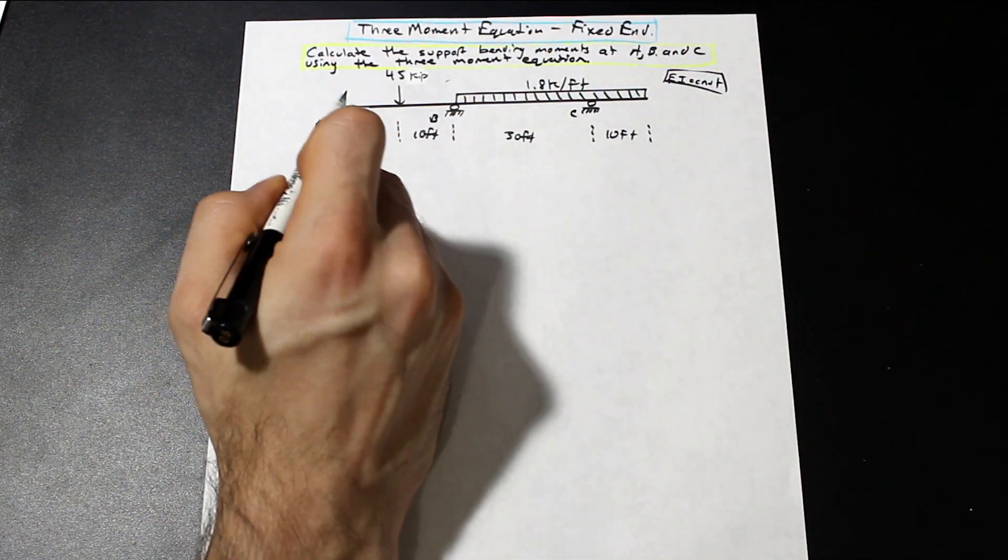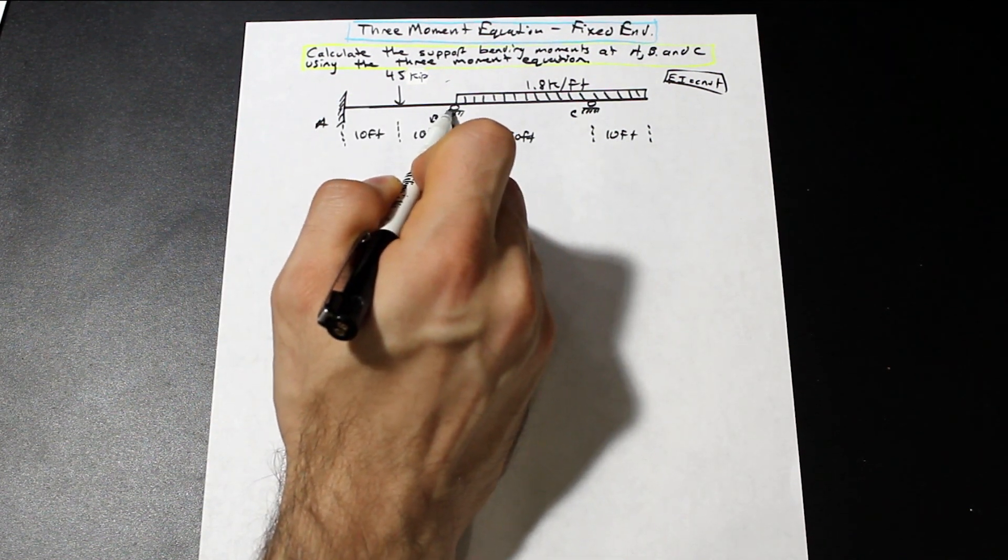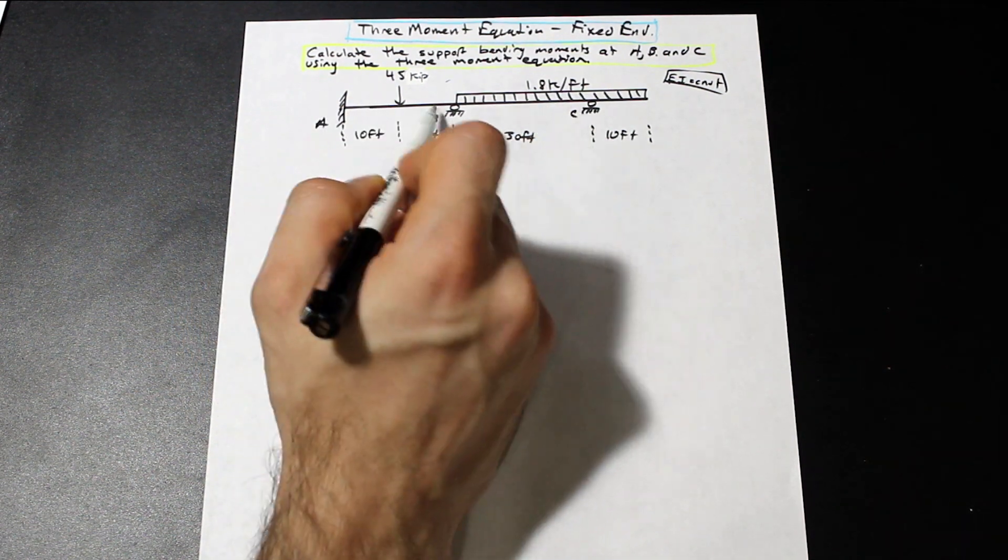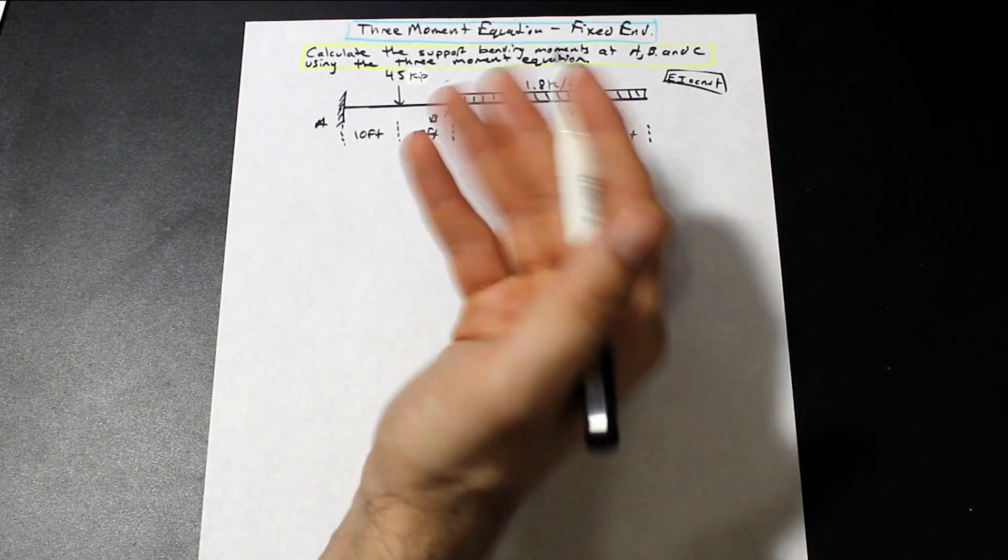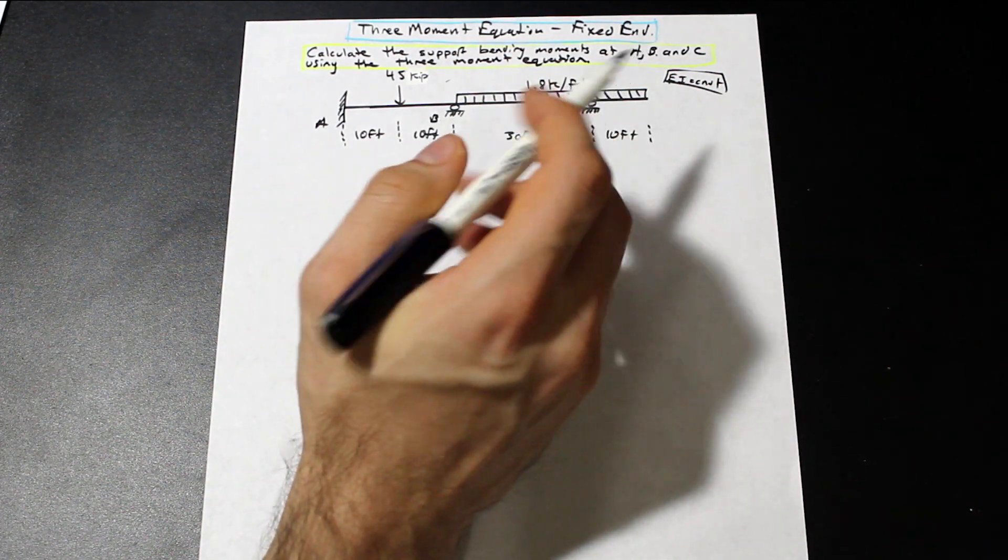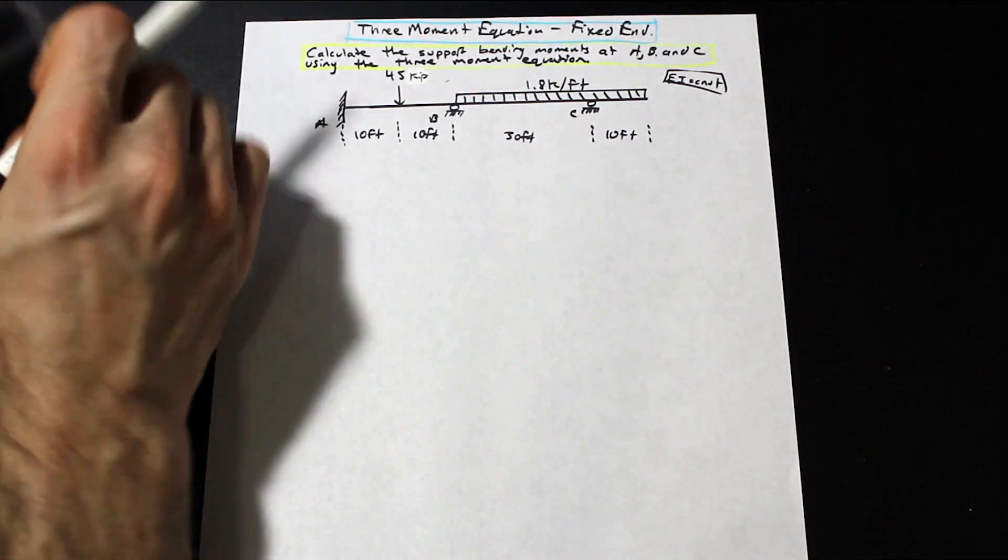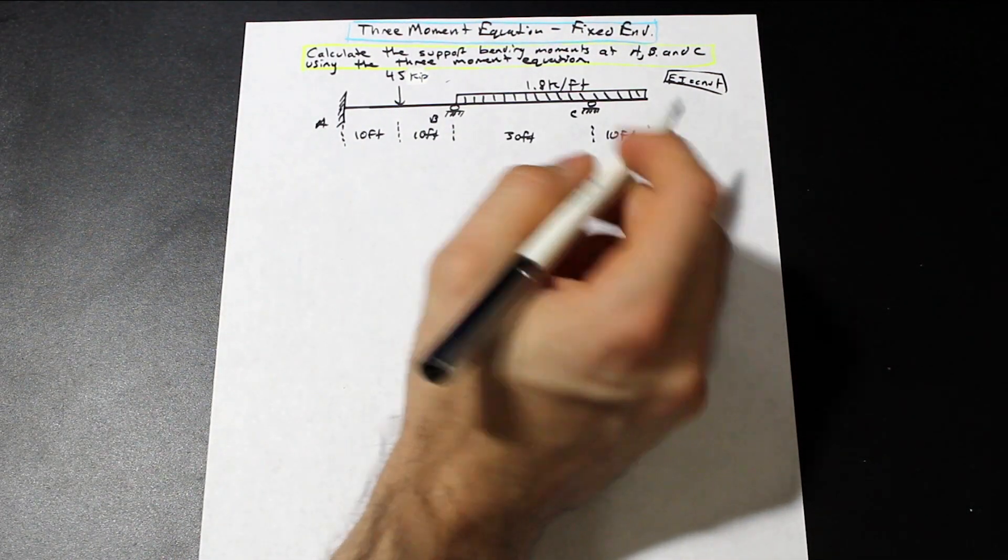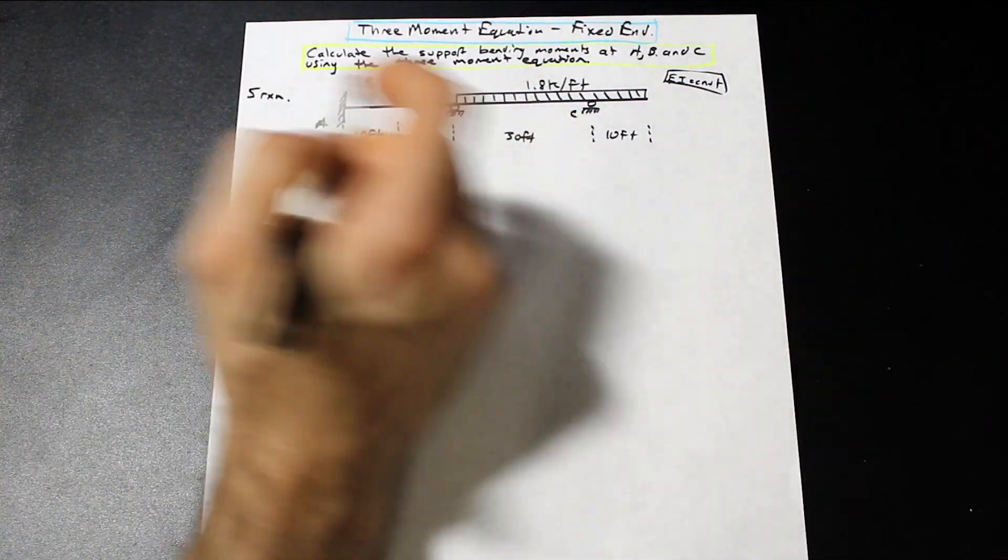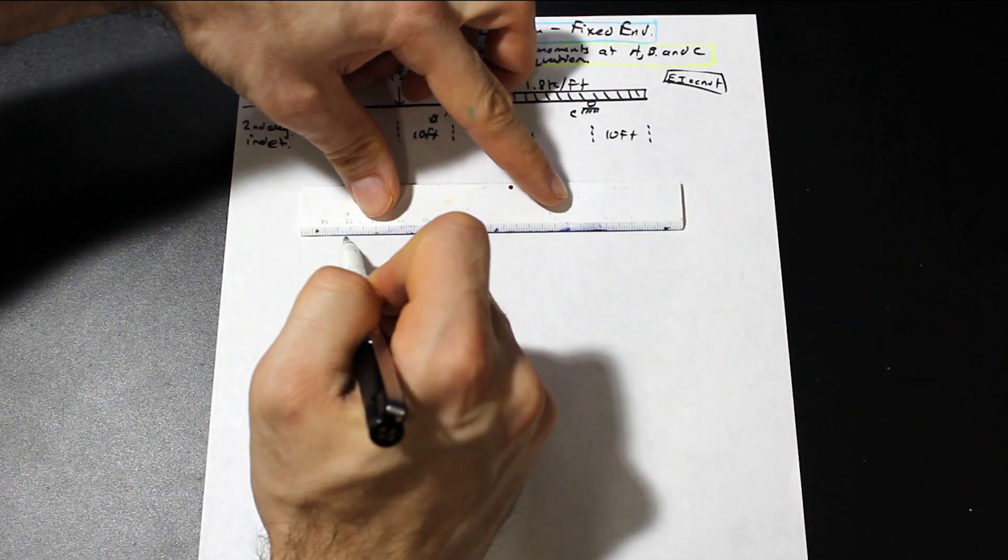The first thing that you'll notice here is that we have a fixed support here. So if we were to go ahead and take the three-moment equation about B, we would have MA, which is unknown here, and MB, which is unknown. C we know, but it would be impossible to solve because we don't have enough equations. So what we do need to do here is a little bit of a trick.